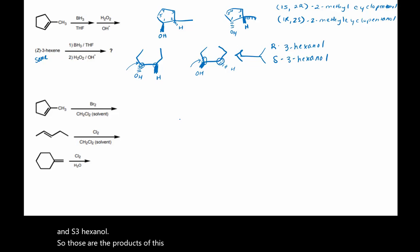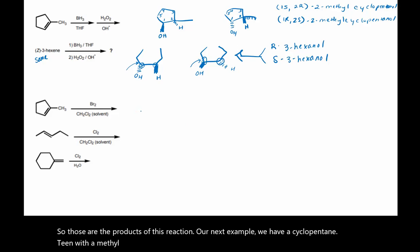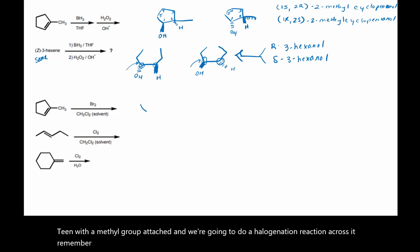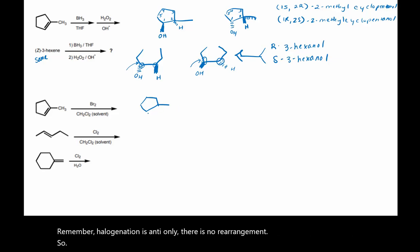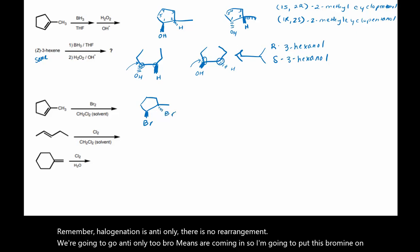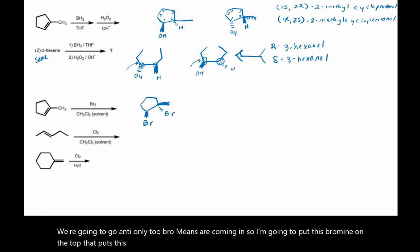Our next example, we have a cyclopentene with a methyl group attached and we're going to do a halogenation reaction across it. Remember, halogenation is anti-only and there is no rearrangement. So we're going to go anti-only. Two bromines are coming in. I'm going to put this bromine on the top — that puts this bromine below, and that brings the methyl group out.